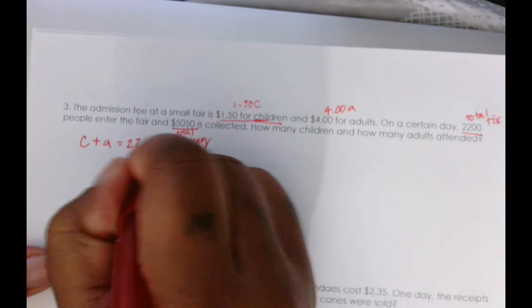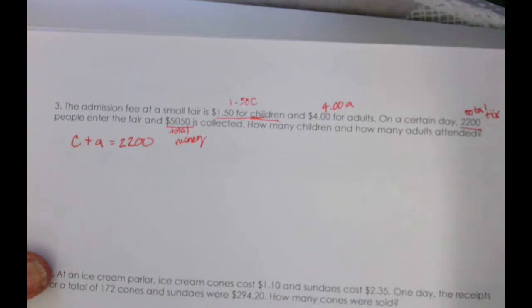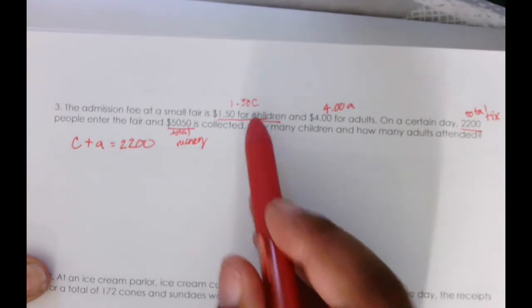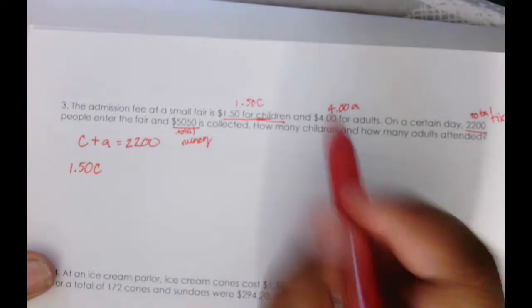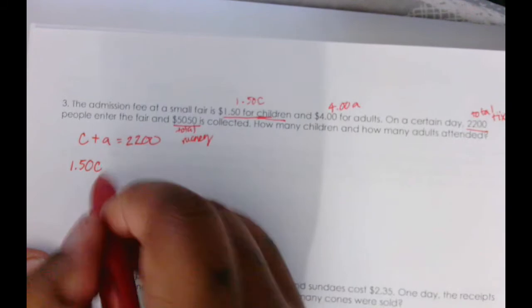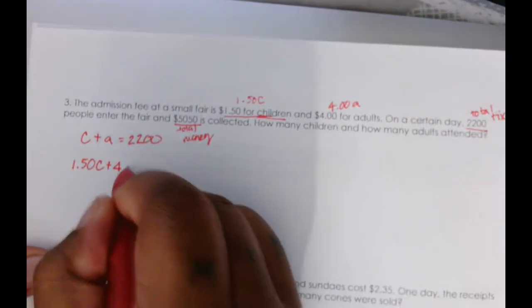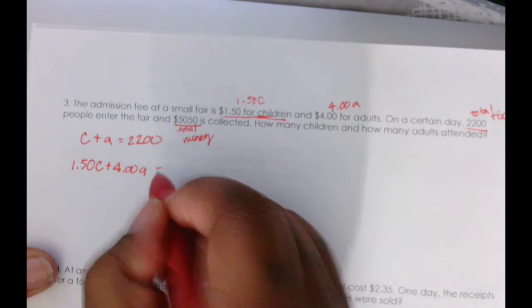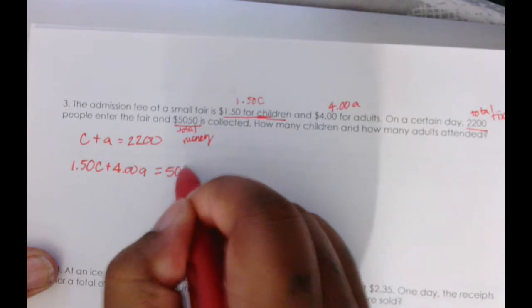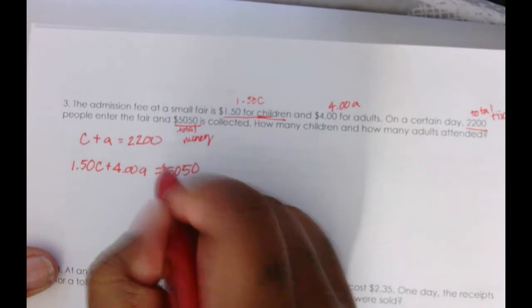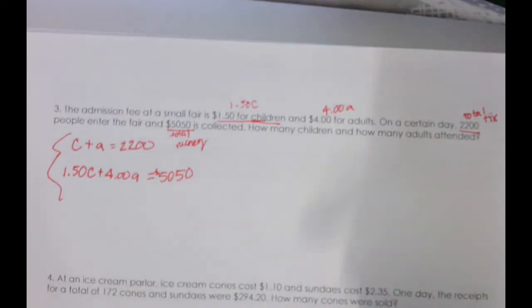I also know that the tickets for the children, however many tickets they sold for the children, they got $1.50 for each of them. So $1.50 times c, plus they got $4.00 for each of the tickets they sold for adults, plus $4.00 times a, is going to give me the total money they made. So they made $5,050. This here is my system that's the system I'm going to have to solve.